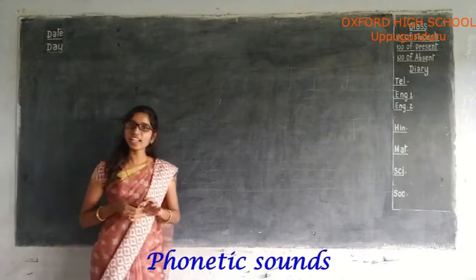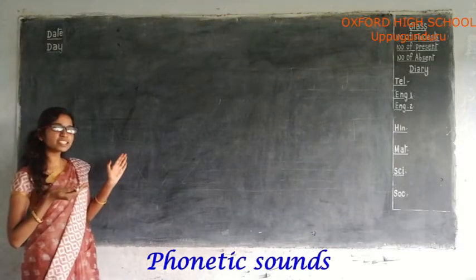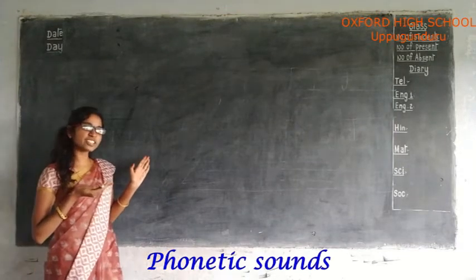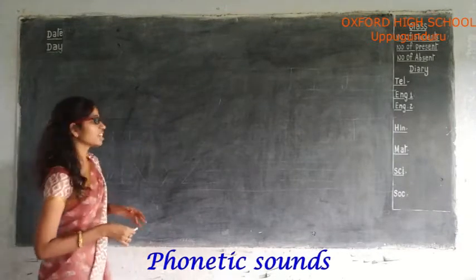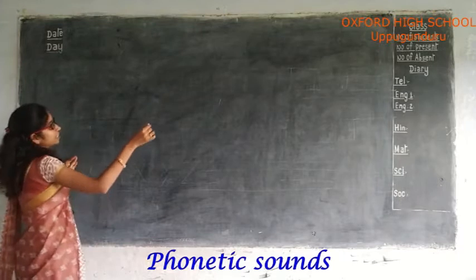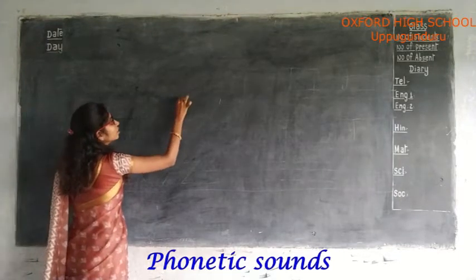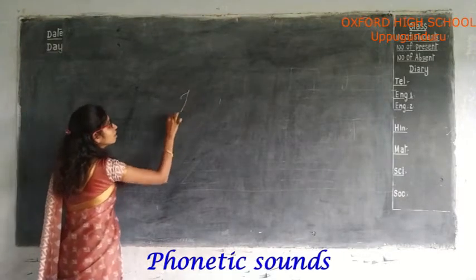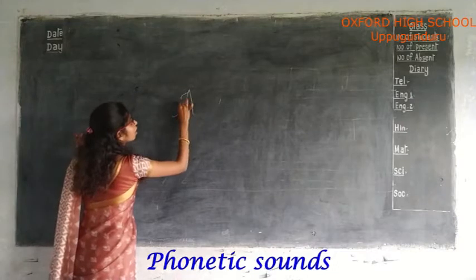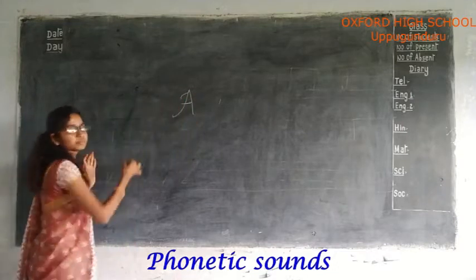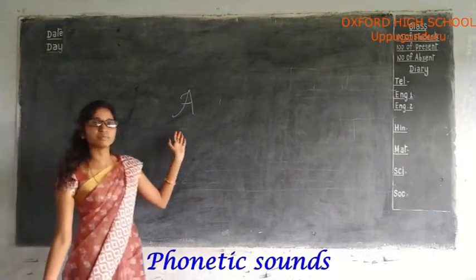Okay, let's learn how to pronounce the alphabets. Let's pick four examples. Now, first — A. What is this? A.